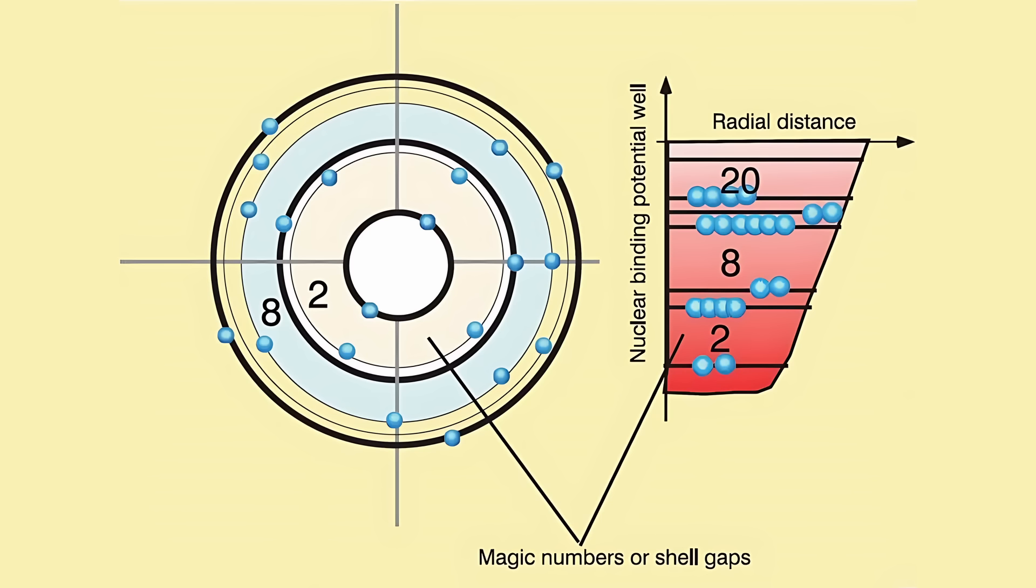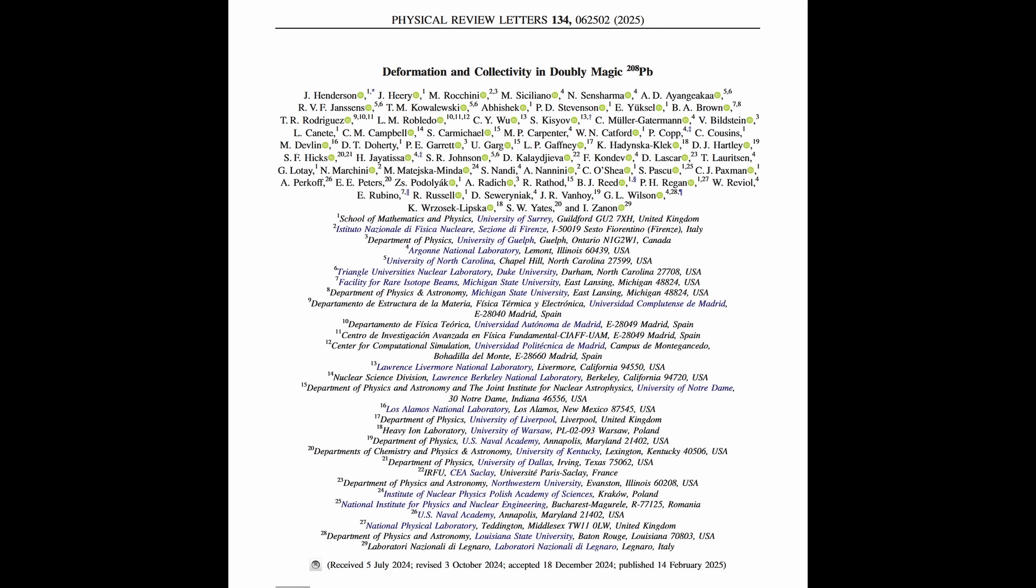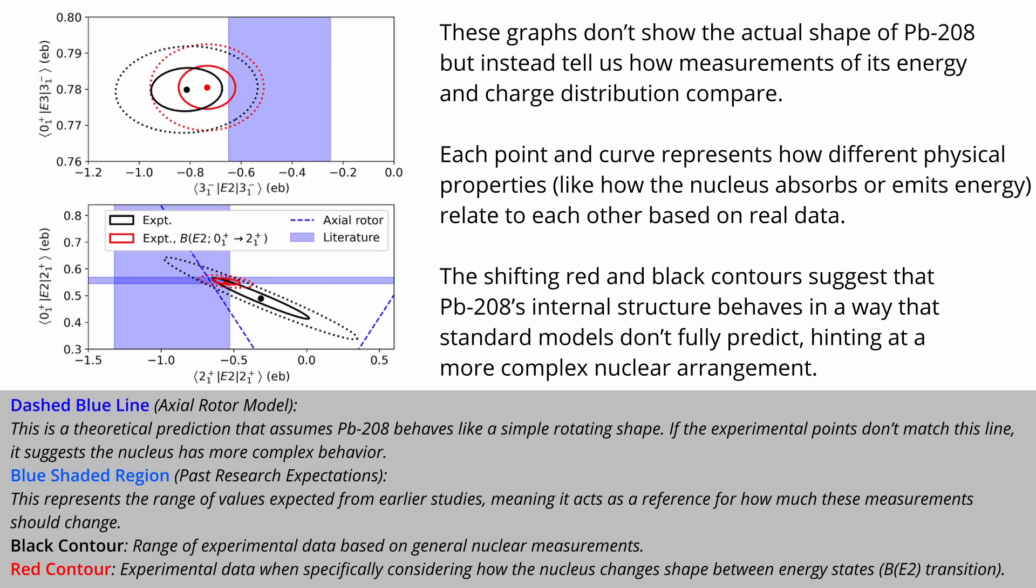When a nucleus has both a magic number of protons and a magic number of neutrons, it is termed doubly magic nucleus, a configuration associated with exceptional stability. A recent study published in Physical Review Letters investigated the structure of lead-208, the heaviest known doubly magic nucleus, with 82 protons and 126 neutrons, both magic numbers. This research is significant because, despite its classification as a stable, doubly magic nucleus, lead-208 exhibits deformation and collectivity, challenging the traditional assumption that such nuclei should always be perfectly spherical.